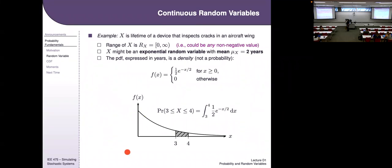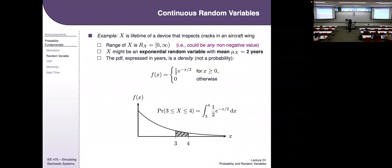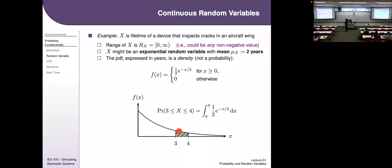An example: the lifetime of a device that inspects cracks in an aircraft ring — how long until it fails. I might model this with an exponential random variable. Its range must be non-negative because it's a lifetime, and I might be given its mean as two years. I can't ask what's the probability it will fail at exactly month three — that's always zero. But I can ask what's the probability it fails between months three and four, integrating the density over that window.